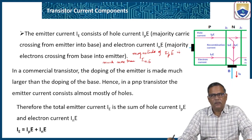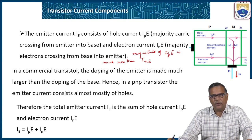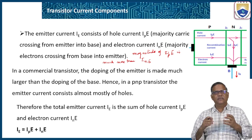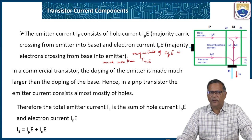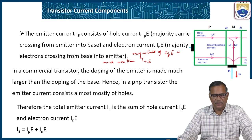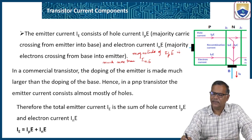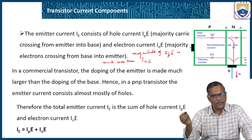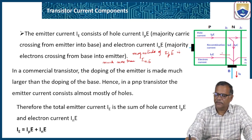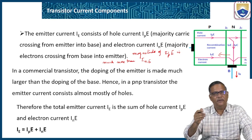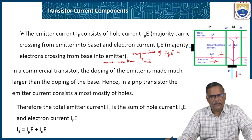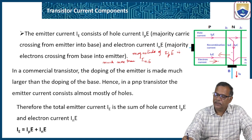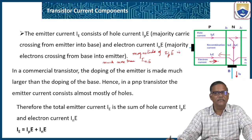Because the collector region is moderately doped, the emitter region is heavily doped, and the base region is lightly doped, the magnitude of INE is less than IPE. In a commercial transistor, the doping of the emitter is made much larger than the doping of the base. The total emitter current IE is due to holes crossing from P to N plus electrons crossing from base to emitter, but the conventional current direction is opposite to the direction of electron flow. Therefore, IE equals IPE plus INE.